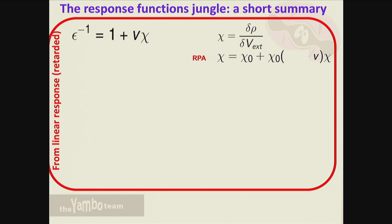On the first day, Andrea spoke about linear response, and you remember that chi is the crucial quantity - the microscopic response function - that you need to calculate epsilon minus one. Andrea showed that it's possible to derive a Dyson equation from the independent particle response function; you can obtain what is called RPA including local fields when you include the Coulomb interaction in this Dyson equation.